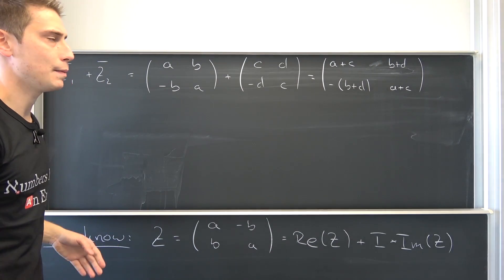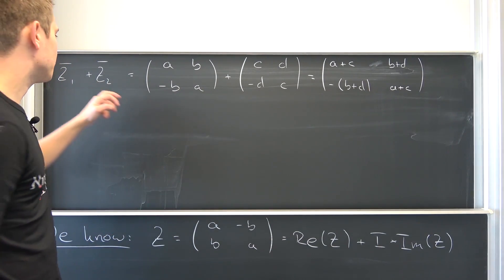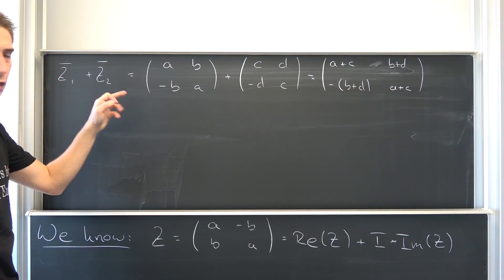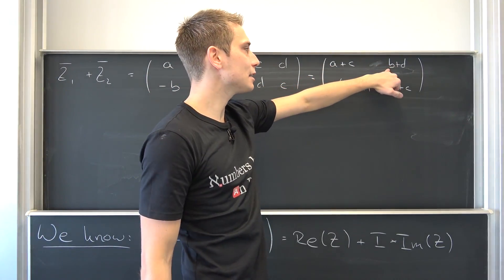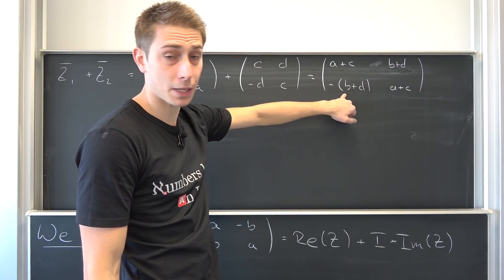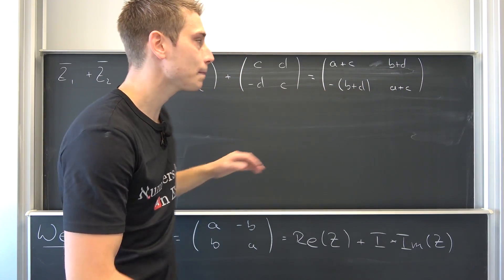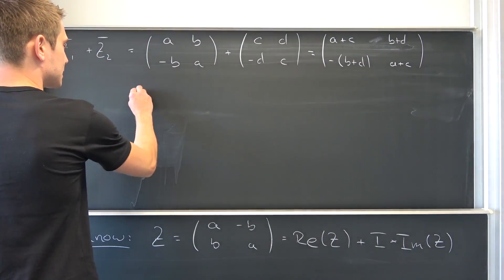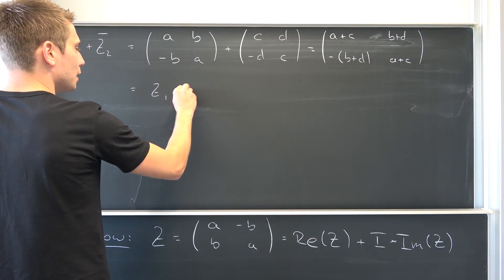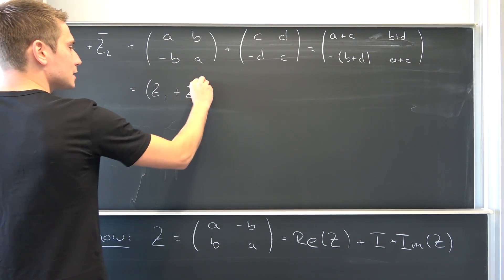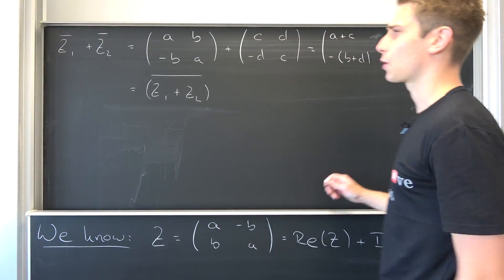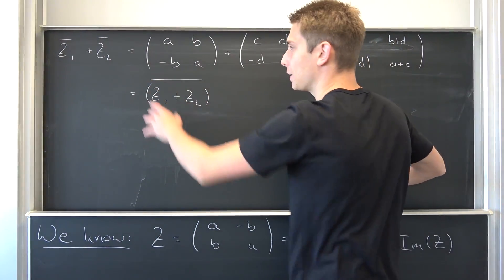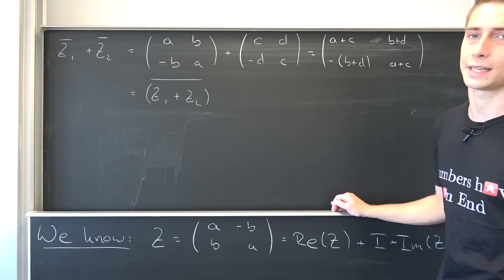And if you remember from the last time if we were to add z1 and z2 together, this is a plus c in those entries and also we would have negative b plus d and b plus d down here. This is something that we had the last time. Meaning overall this is z1 plus z2 but the transpose of this thing, meaning it's the complex conjugate. Meaning our complex conjugate is being preserved under addition and thus also under subtraction.